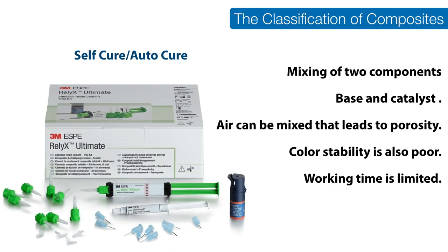Chemically activated resins are supplied as two pastes — one containing a benzoyl peroxide initiator and the other a tertiary amine activator. The amine reacts with the peroxide to form a free radical, initiating addition polymerization. One problem is that during mixing it is almost impossible to avoid incorporating air, forming pores that weaken the structure and trap oxygen that inhibits polymerization. Another problem is that the operator has no control over working time after the two components are mixed.